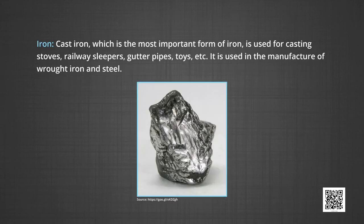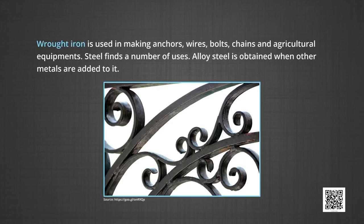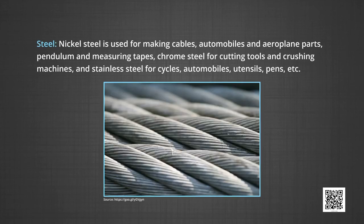Uses of iron. The cast iron, which is the most important form of iron, is used for casting stoves, railway sleepers, gutter pipes, toys, etc. It is used in the manufacture of wrought iron and steel. The wrought iron is used in making anchors, wires, bolts, chains and agricultural implements. Steel finds a number of uses. Alloyed steel is obtained when other metals are added to it. Nickel steel is used for making cables, automobiles and aeroplane parts, pendulum and measuring tapes. Chrome steel is used for cutting tools and crushing machines. And stainless steel for cycle, automobiles, utensils, pens, etc.